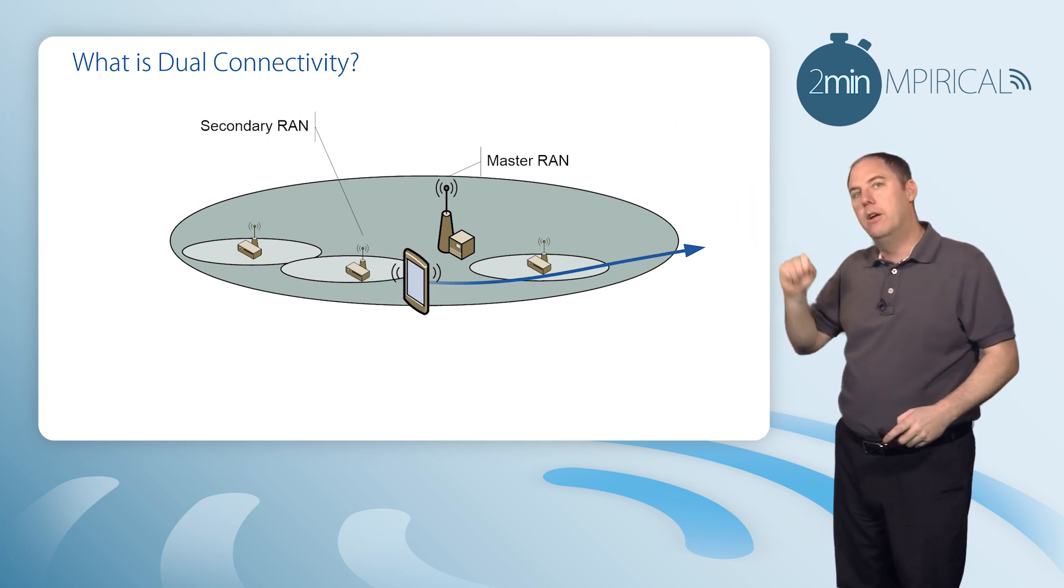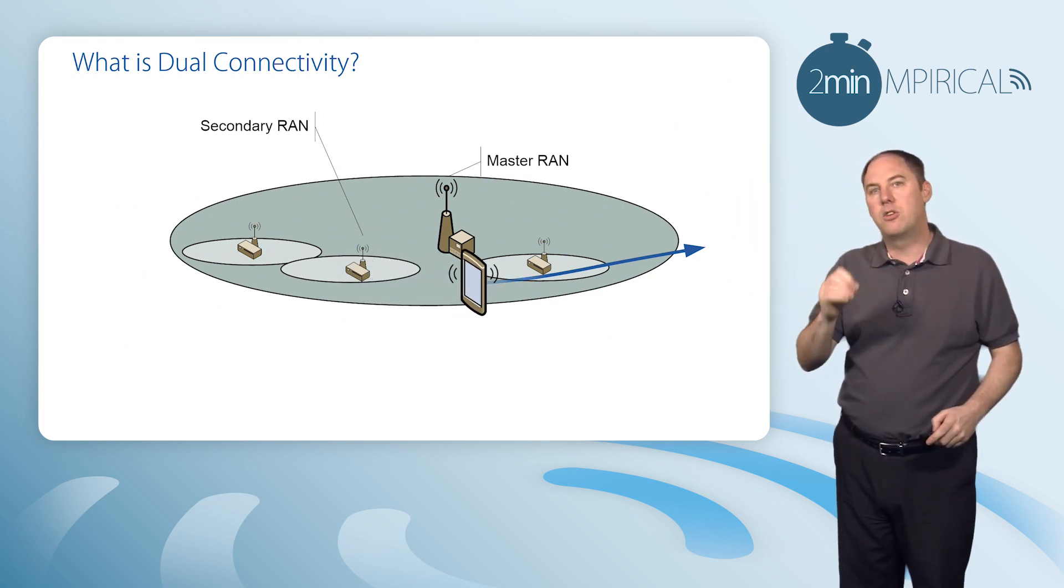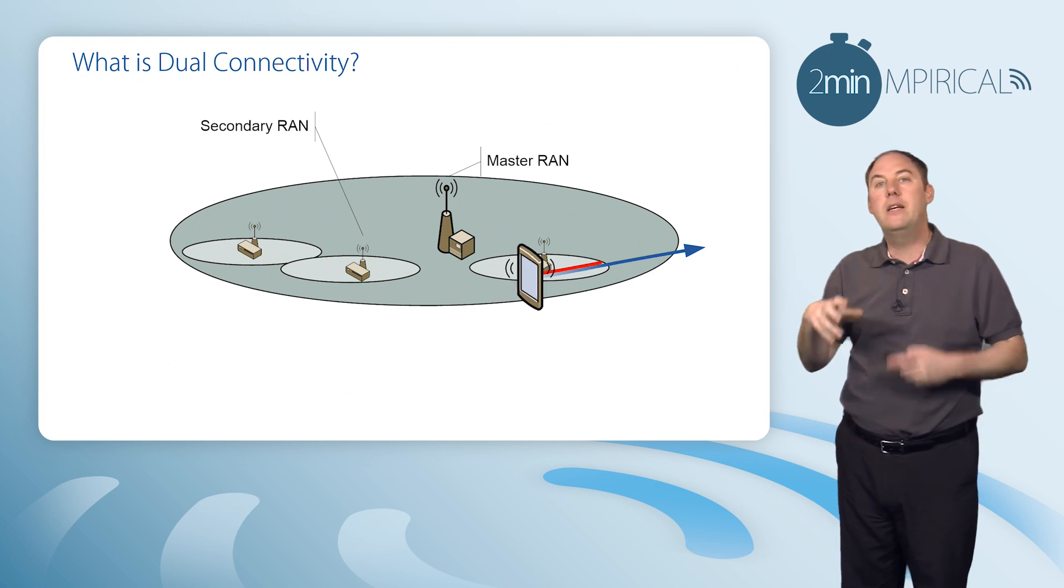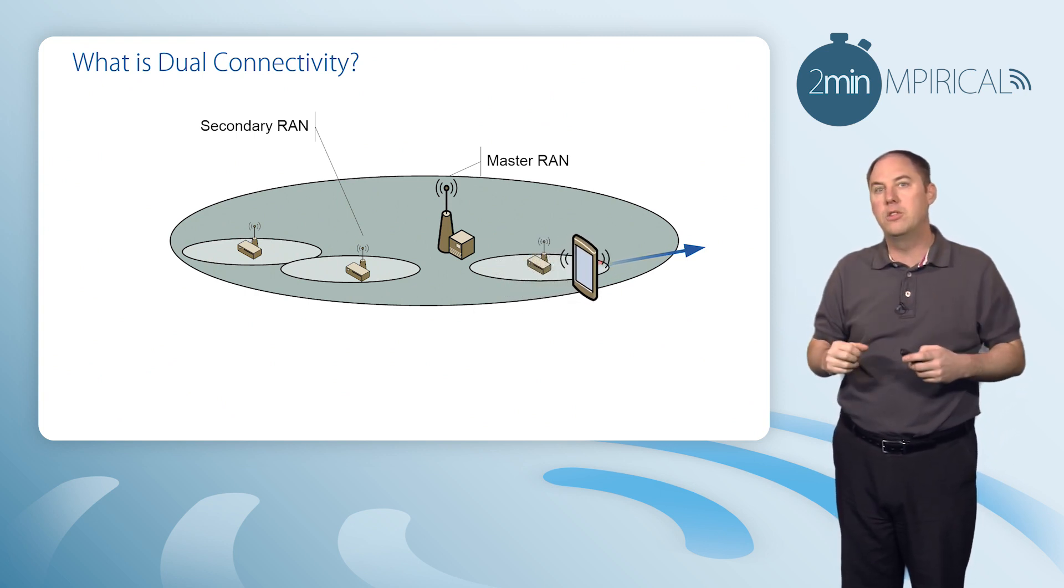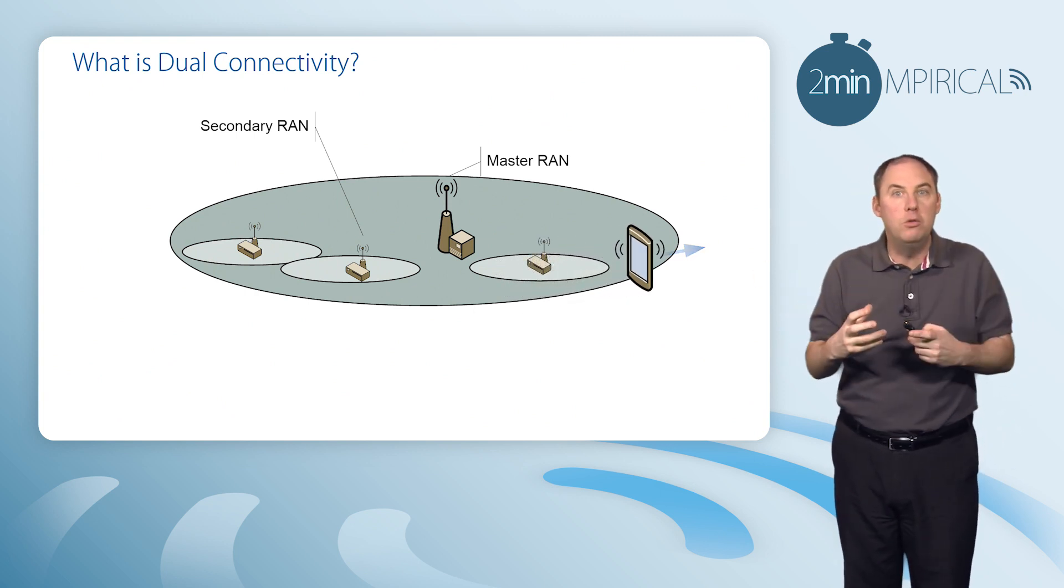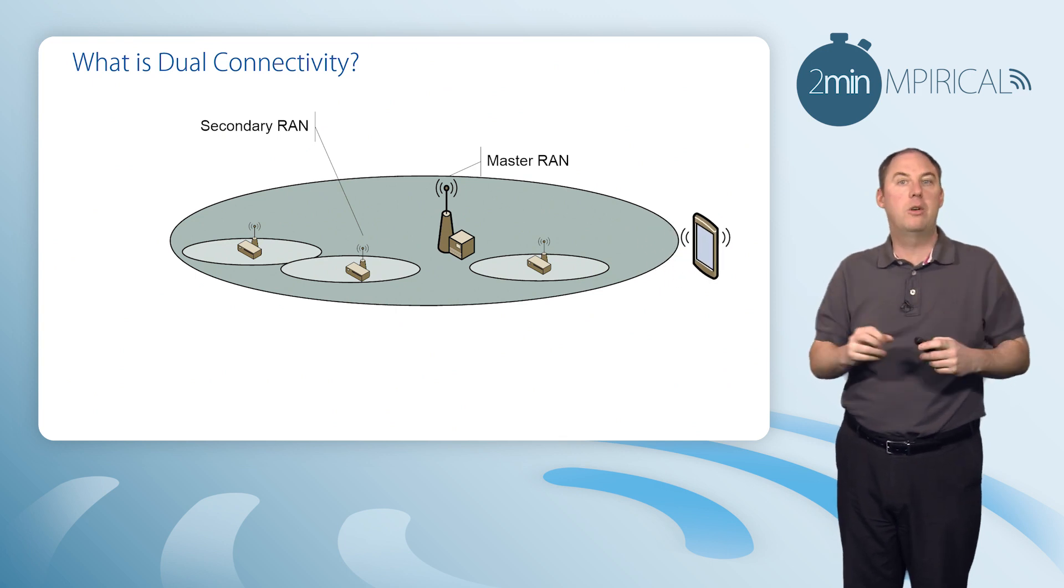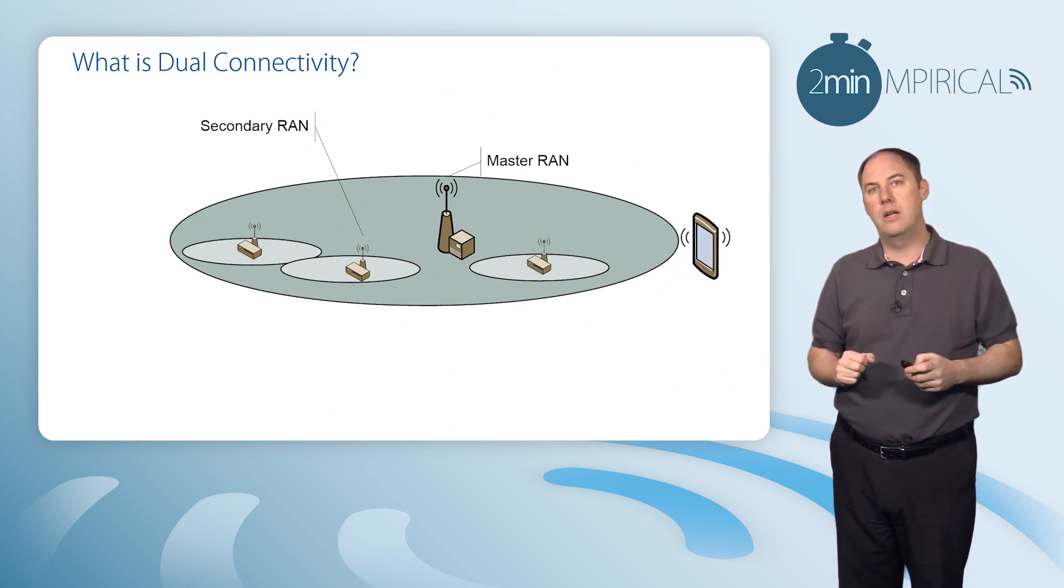We're then going to go back exclusively to the master RAN node, and then we're going to switch into another small cell—another boost. And the key thing there is we're getting boosts of performance as we go to dual connectivity with those small cells.